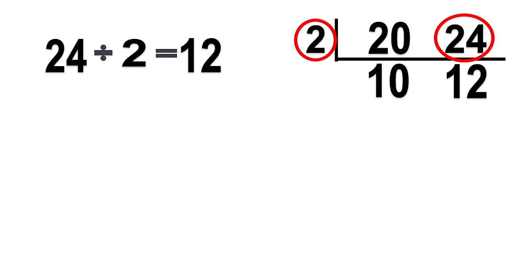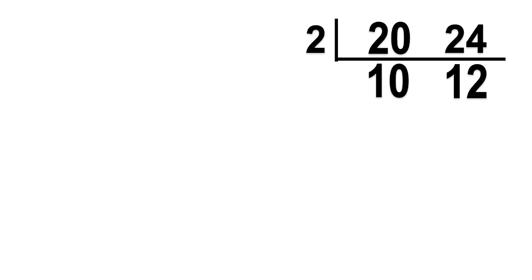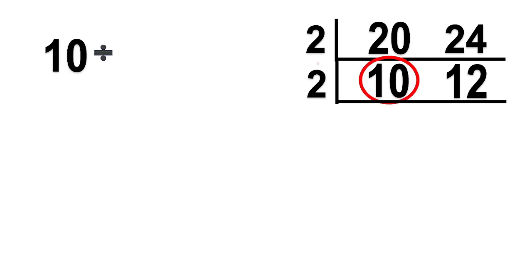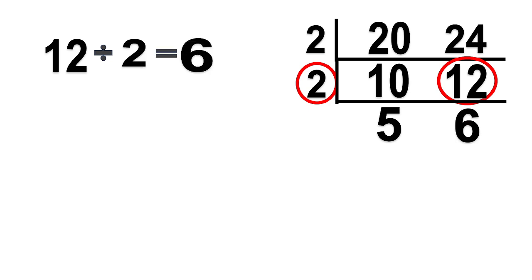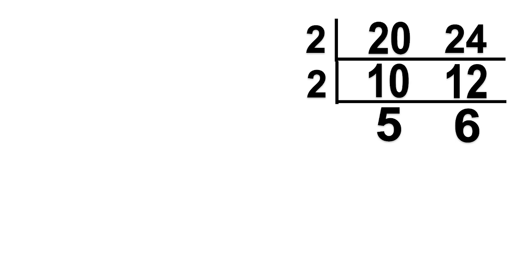Now, think of a prime number that can divide 10 and 12. We are going to use 2 because 2 can divide both 10 and 12 without remainder. Let's proceed with division. 10 divided by 2 equals 5. 12 divided by 2 equals 6. The remaining numbers are 5 and 6. 5 and 6 have no common factors. Therefore, we can now stop dividing.